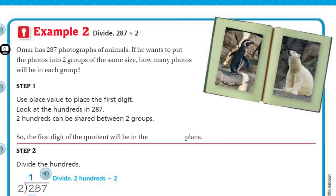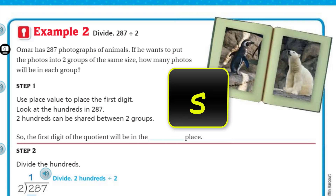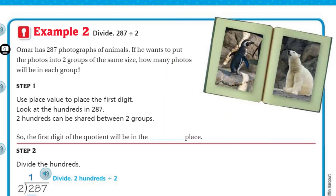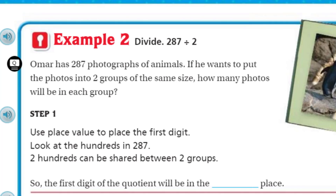Example 2. Divide — we're going to take 287 divided by 2. We were receiving a lot of steps guiding us along, and this one I think is going to be a little bit less of that. It says Omar has 287 photographs of animals. If he wants to put the photos into two groups of the same size, how many photos will be in each group?